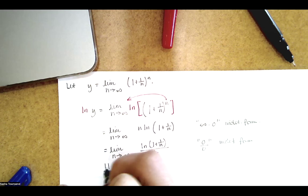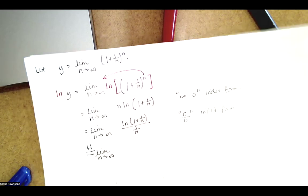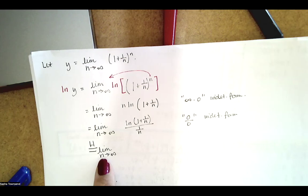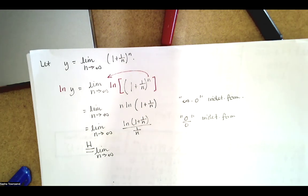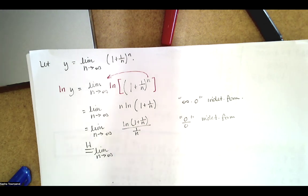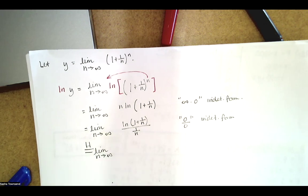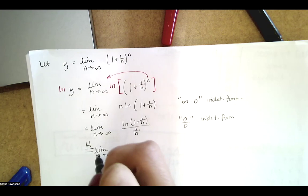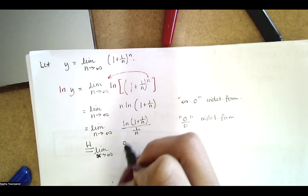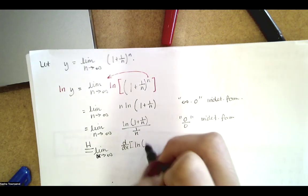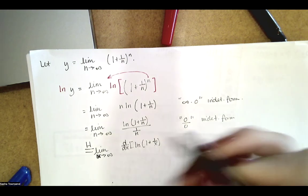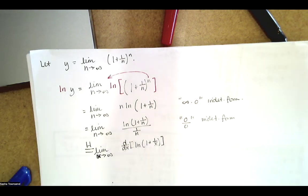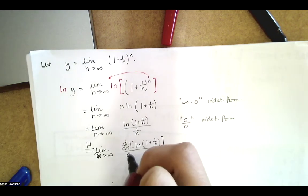To resolve the indeterminate form, we rewrite: multiplying by n is the same as dividing by one over n. This converts the infinity times zero form into a zero over zero form, where L'Hôpital's rule applies. Since n is a natural number and derivatives require a continuous variable, we switch to a real variable x, justified because if the function and sequence share the same values, their limits agree.